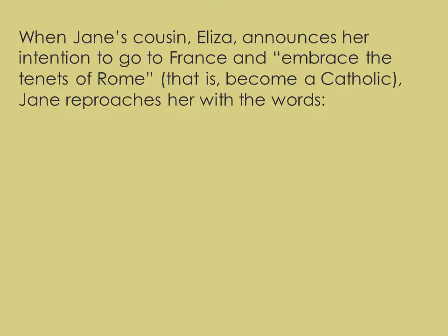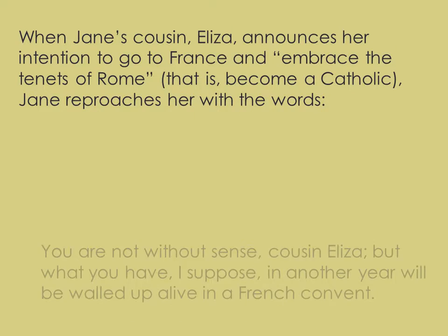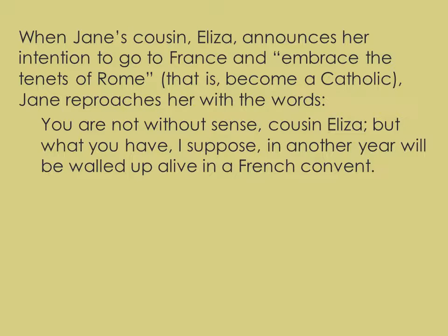Later in the novel, Jane's cousin Eliza announces her intention to go to France and embrace the tenets of Rome — become a Catholic. Jane sees this as a kind of betrayal of culture and society, saying her sense will soon 'be walled up alive in a French convent.' The message is: we're English, we don't do that sort of thing, we're not Catholics. Brontë seems to agree with Jane that this is simply wrong.